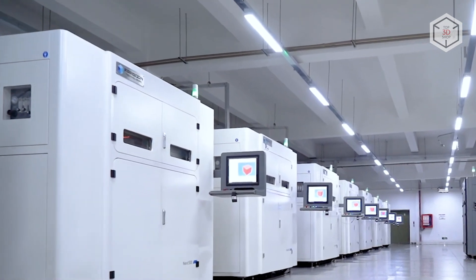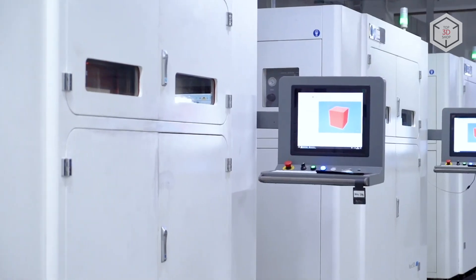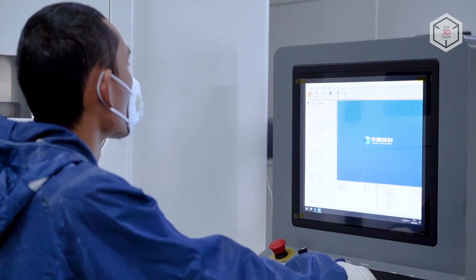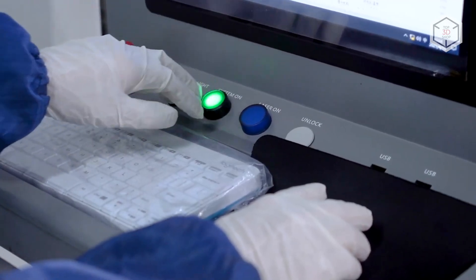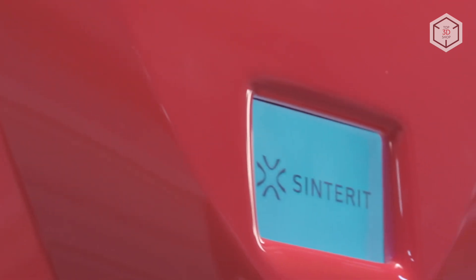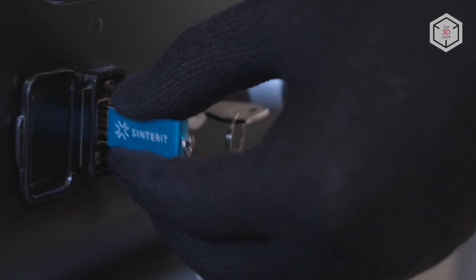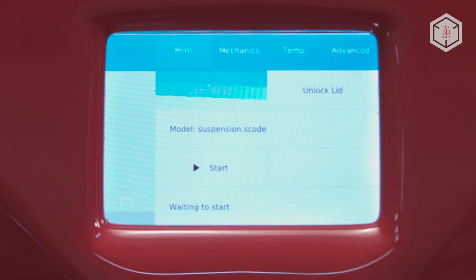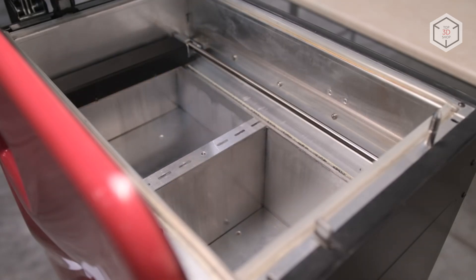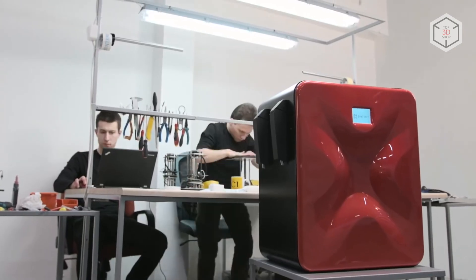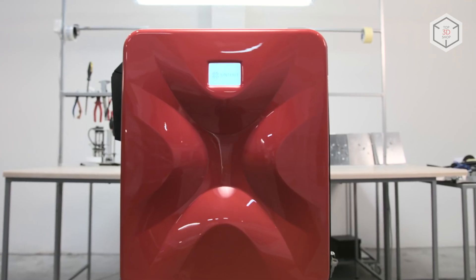First SLS printers were enormous, and even the smallest of them required no less than 10 square meters of installation size. Naturally, such devices couldn't be regarded as a home-use solution, and remained the privilege of industrial companies until 2016, when the first benchtop SLS 3D printer hit the market. It wasn't small enough yet to be used at home, but was perfectly suitable for small businesses and prosumers. Since then, a decent number of desktop SLS printers have emerged in the market.